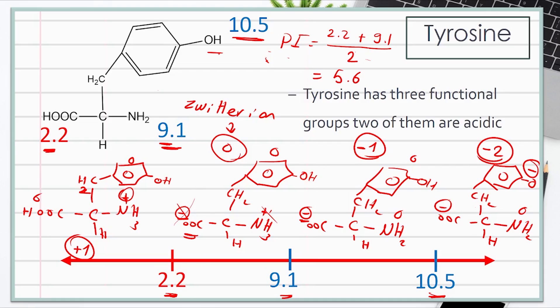One thing to remember: the pKa value tells us that 50% of our molecule is deprotonated at that pH. That is why above 2.2 the carboxylic group is deprotonated, above 9.1 the ammonium group is deprotonated, and above 10.5 the hydroxyl group is deprotonated. So the pKa value is the value above which the functional group will be in its deprotonated form.